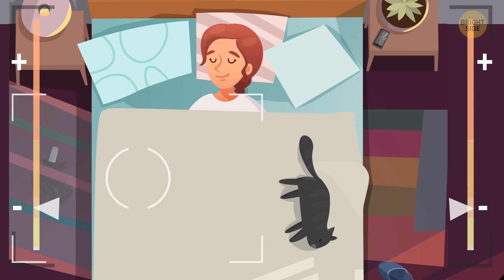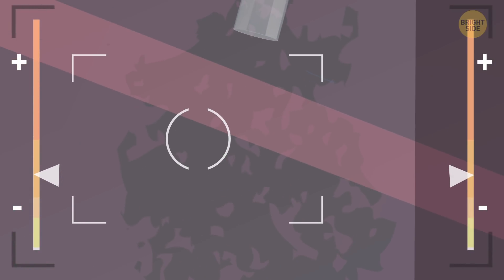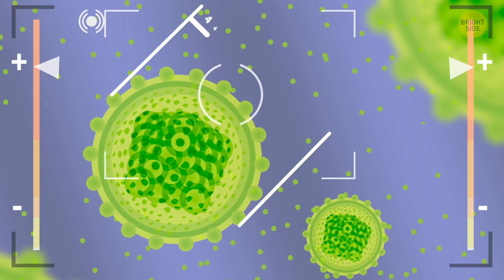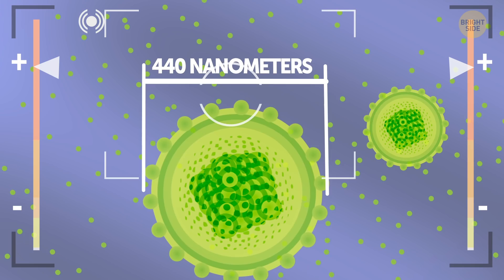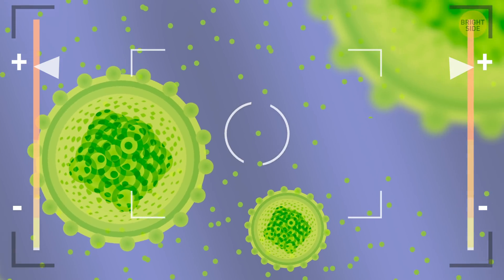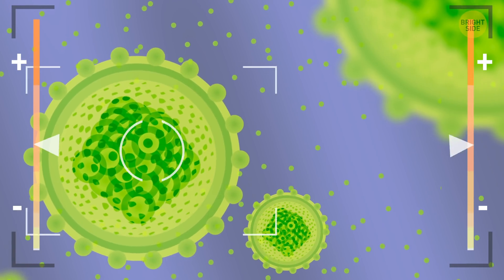Now, a little further, we meet the largest virus. It's called megavirus, and it's just 440 nanometers in size. Just imagine how small are the rest if this guy is the biggest of them all! Oh boy, I think it's about to attack us! Let's go quick!